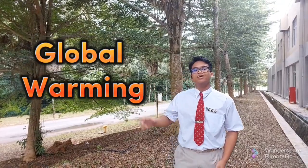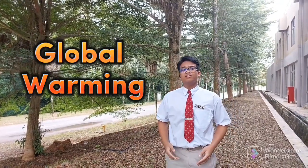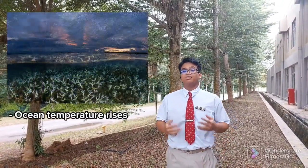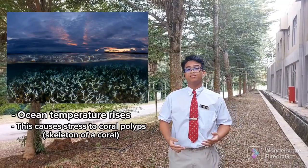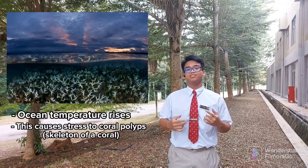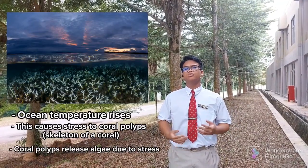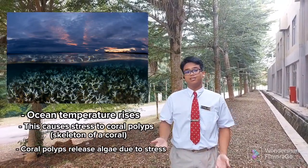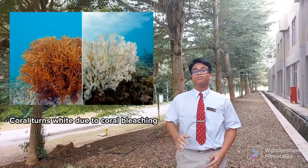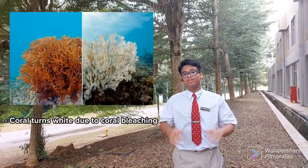Now, moving our attention to global warming. Global warming causes a rise in temperature. The rising temperature causes stress to coral polyps, which are like skeletons to corals. Due to stress, coral polyps release the algae that they store. The loss of algae causes the coral to turn white and go through coral bleaching.